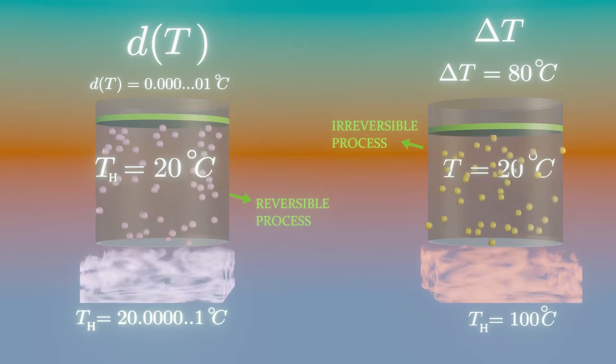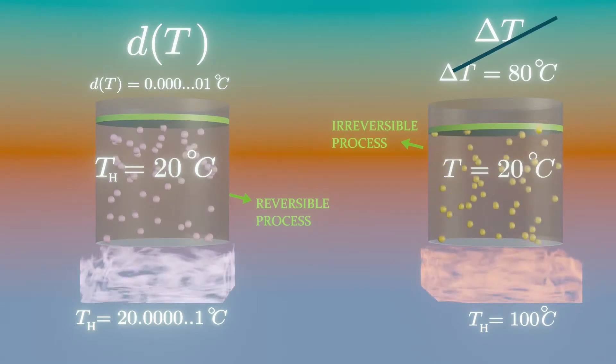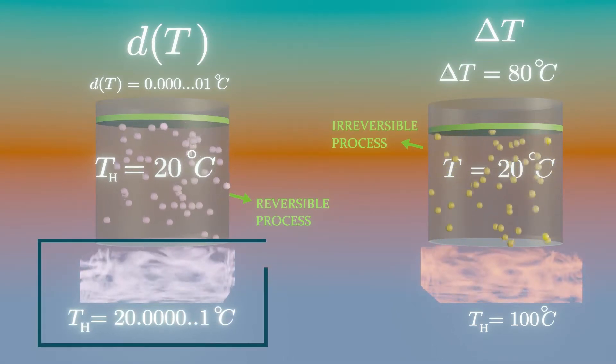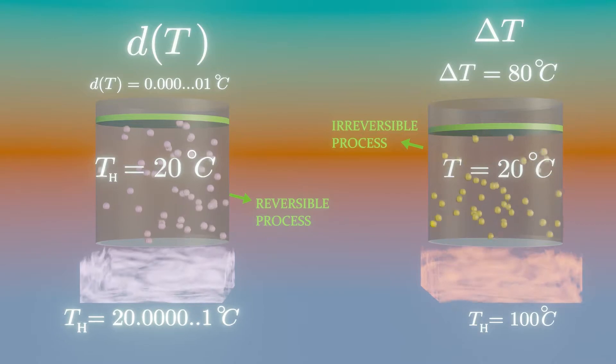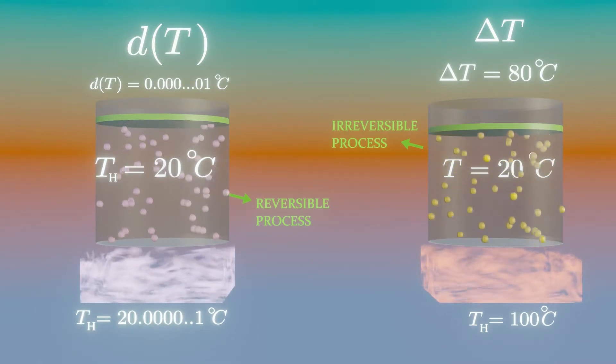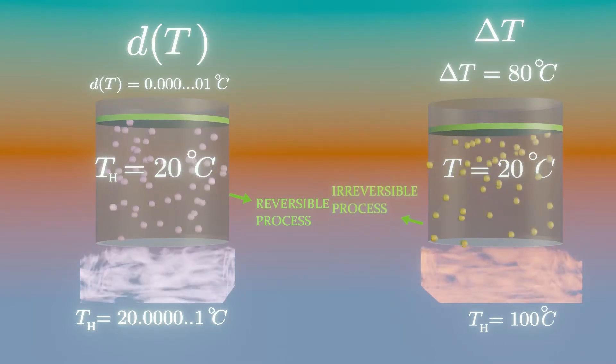Therefore, during heat transfer in the Carnot cycle there must be no finite temperature difference. When the engine takes heat from the hot reservoir TH, the working substance of the engine must also be at TH. Otherwise, irreversible heat flow would occur.